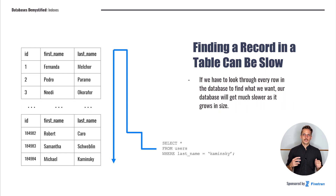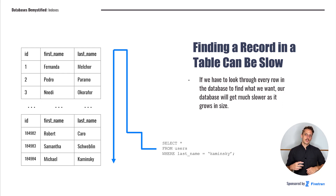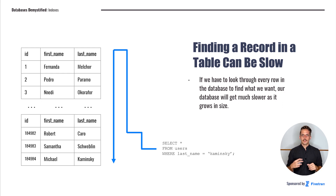If we want to look up a row by filtering on last name — for example, finding the row for Michael Kaminsky — this is going to be very slow for the database. Since the data aren't ordered by last name, the database has to start at the first row, check if last name equals Kaminsky, move to the second row, check again, and repeat that for every single row in the table. If we're doing this sort of filtering very frequently, our database is going to be very slow. So we want to create an index on the last name column to find rows by last name much faster.